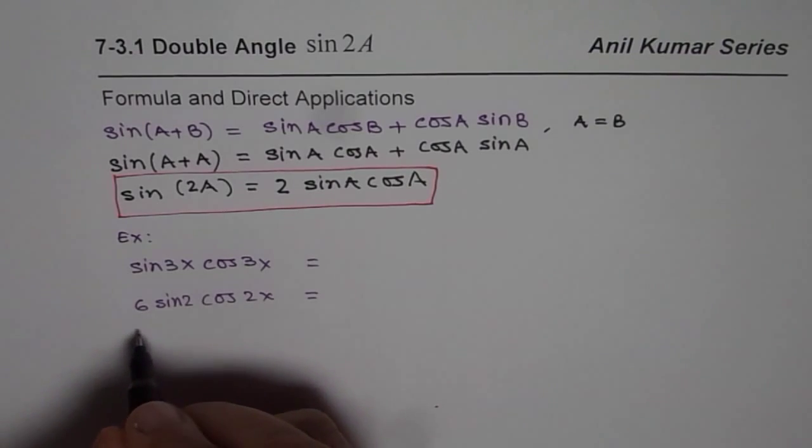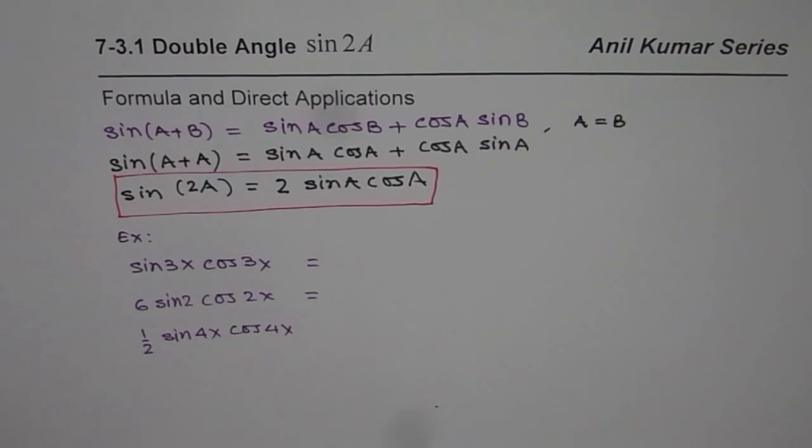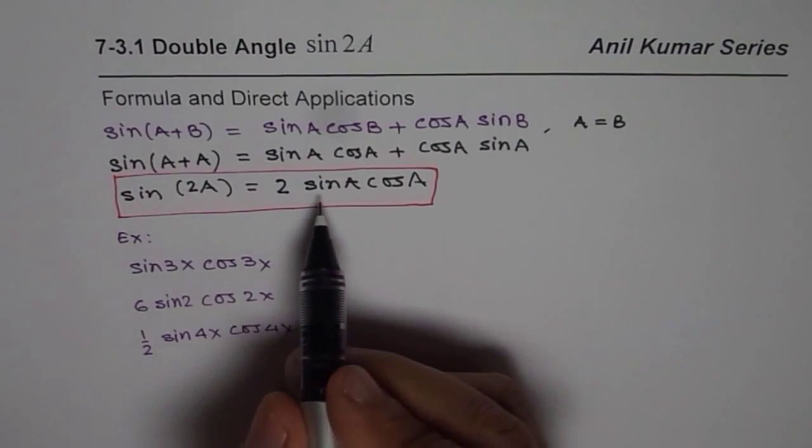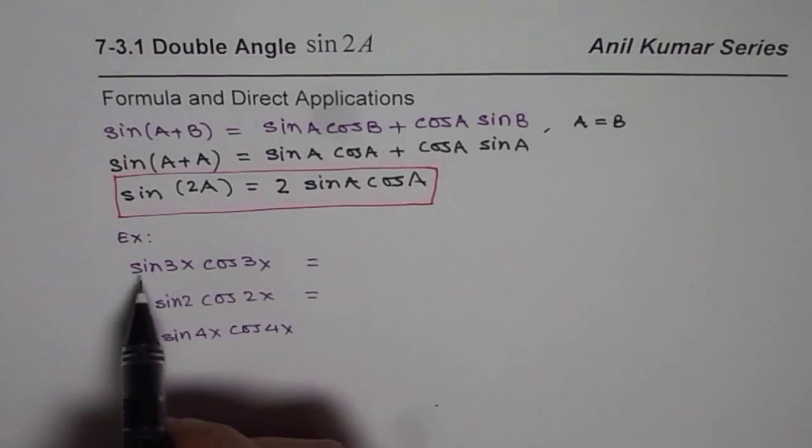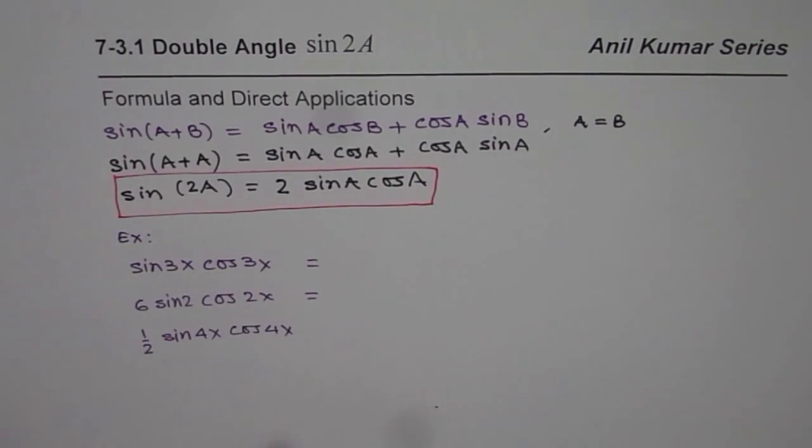Or maybe half time sine of 4x cos of 4x equals to what? Now these questions are very simple to answer now. We are actually making it 2 of this. We know 2 sin x cos x is sine 2A, correct?